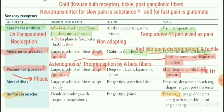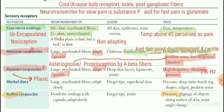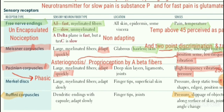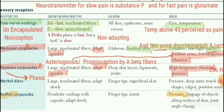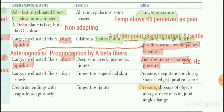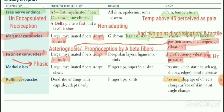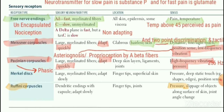Pacinian corpuscles detect high frequency vibration and somewhat pressure, but pressure is more associated with Ruffini corpuscles. If pressure is given in a scenario, prefer Ruffini — unless high frequency vibration is also mentioned, then it is Pacinian. Pacinian corpuscles are phasic, not tonic receptors. Merkel disc detects deep static touch. Ruffini corpuscles are for pressure sensation.